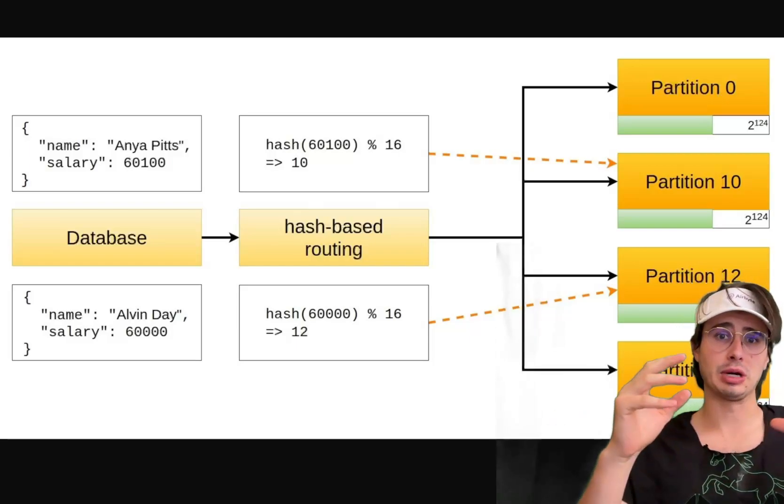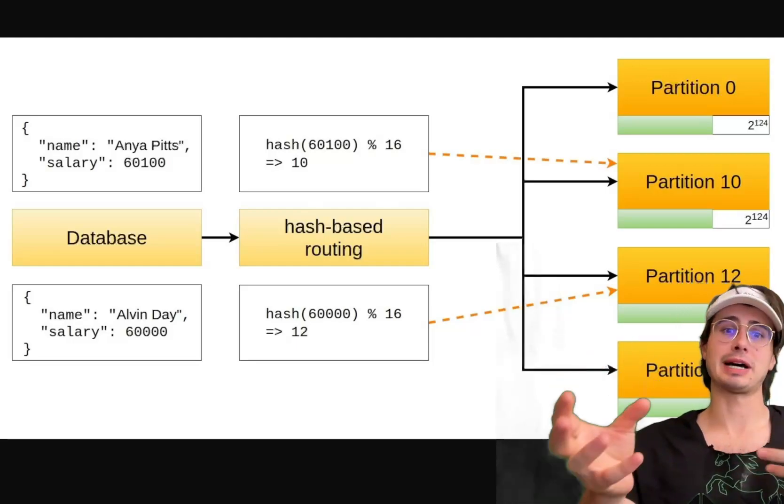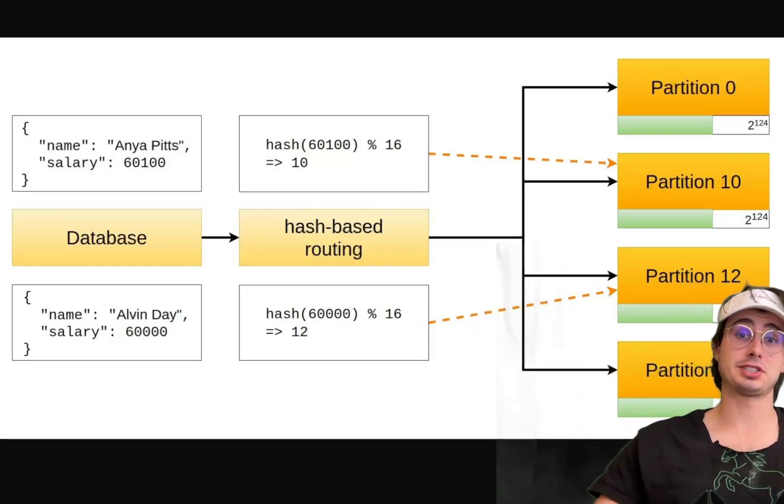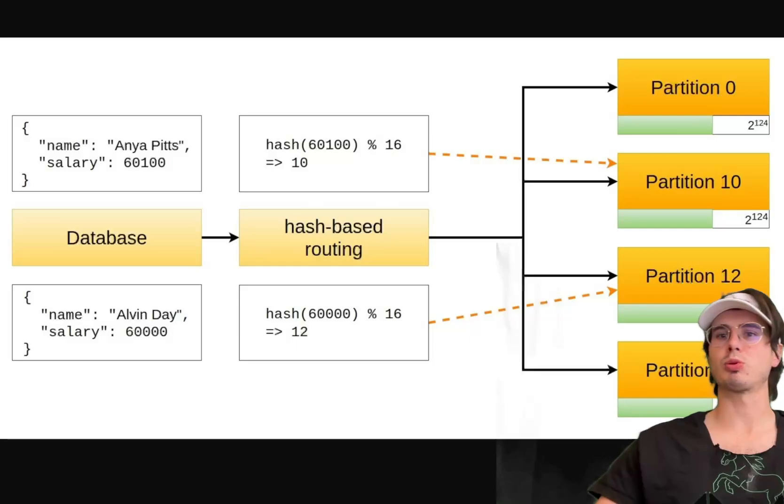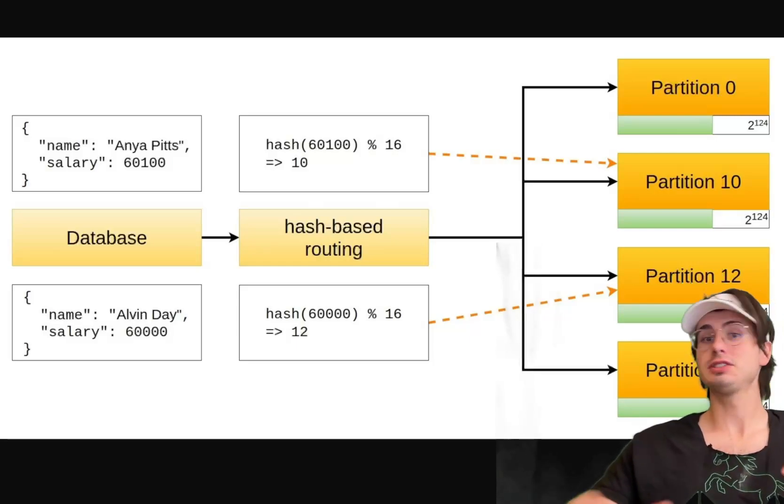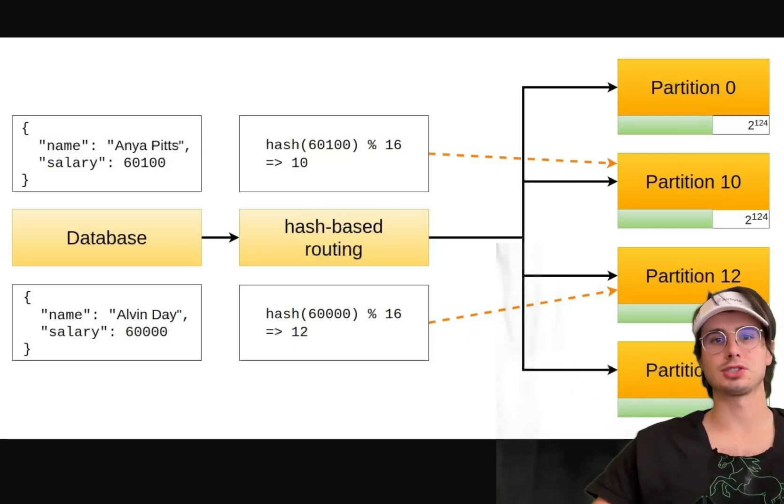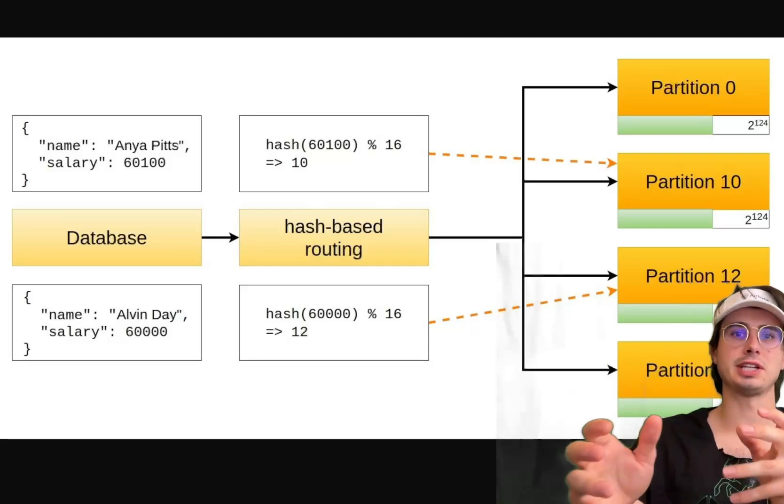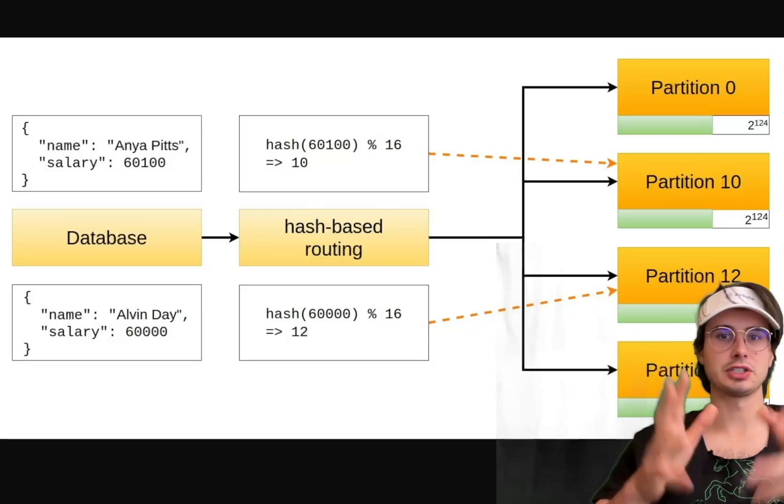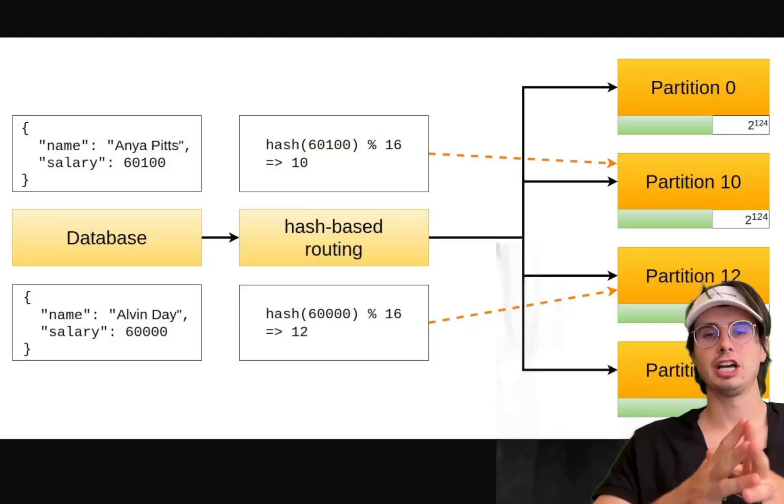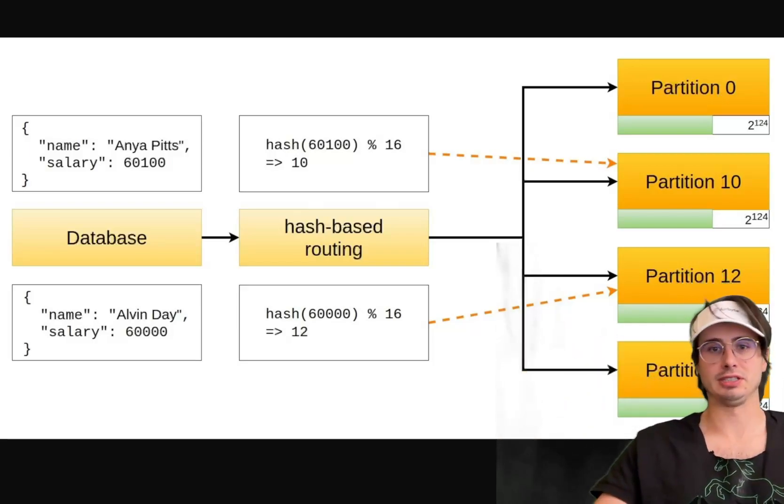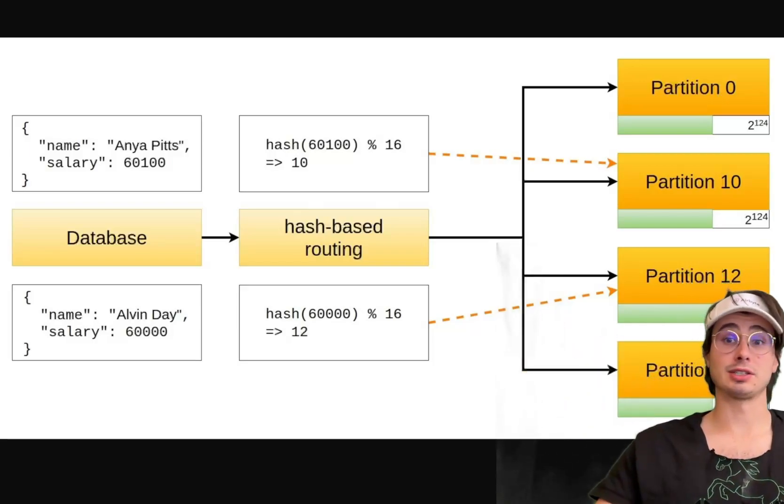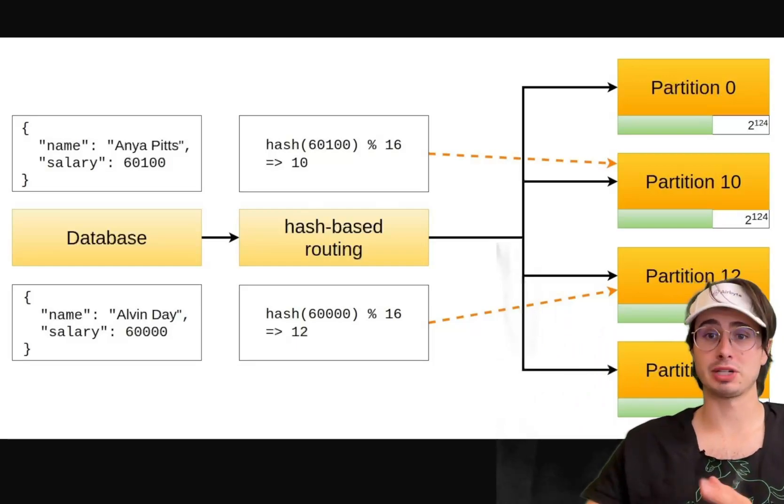I just mentioned two different terms that I need to also explain: skewed workloads and hotspots. In some scenarios, a certain partition can receive a disproportionate amount of traffic and that leads to skewed workloads and hotspots. A skewed workload and hotspot they're referring to the same thing, just having too much of your data within a single partition relative to the rest of your partitions. Hotspots can degrade performance and cause bottlenecks if too much data is being sent to a server that isn't equipped to process it.